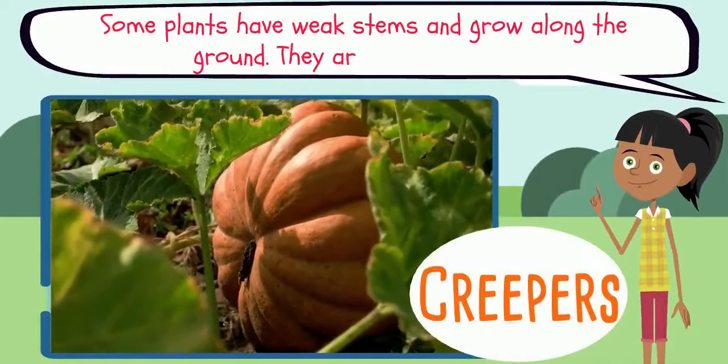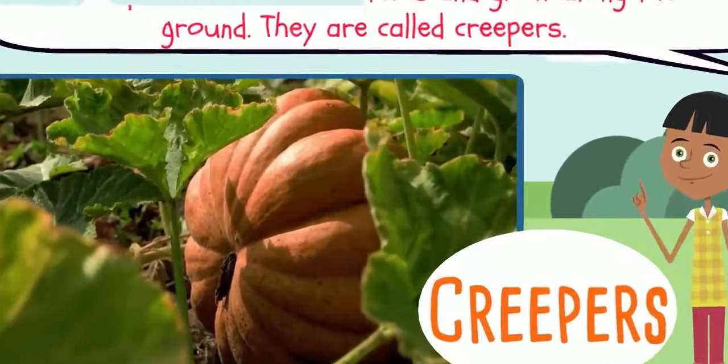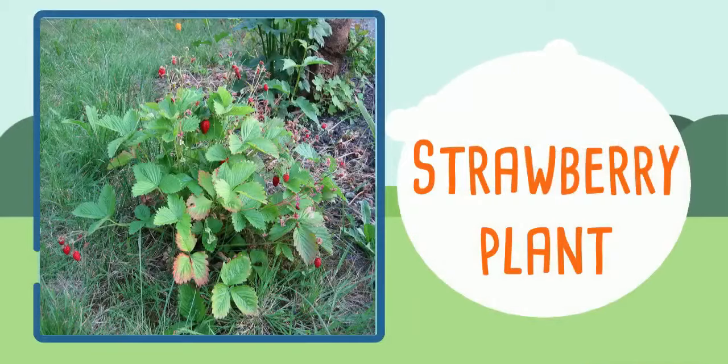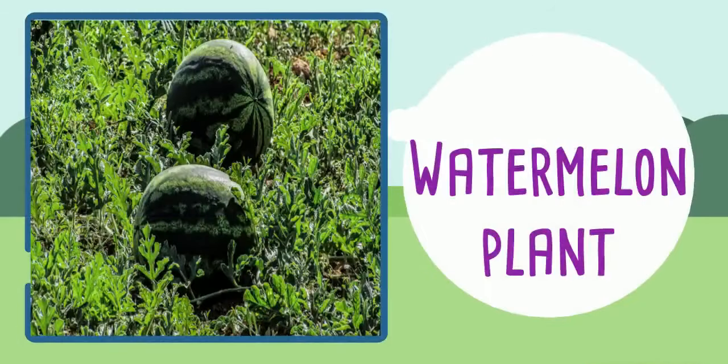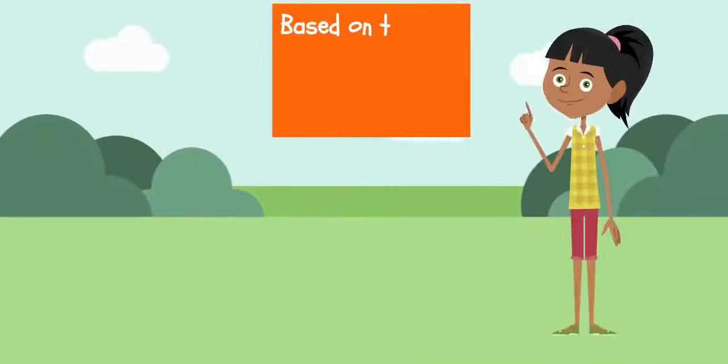Some plants have weak stems and grow along the ground. They are called creepers. For example, strawberry plant and watermelon plant.